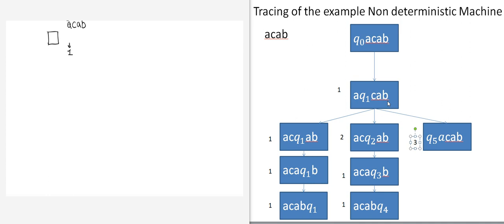We simulate A, C, A, B and the pointer is now here. Obviously we do not have an accept configuration, so we need to continue. In the next step, since I did not reach an accept configuration, I move on to the next node in the breadth-first search — because BFS goes one level at a time.